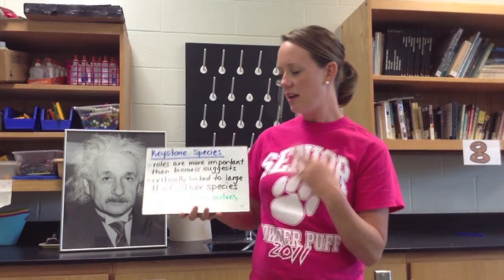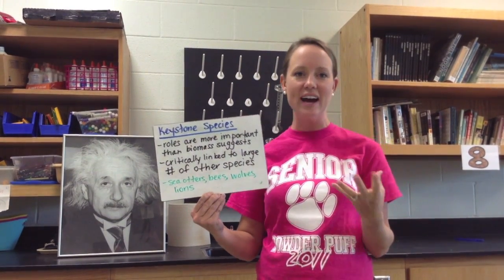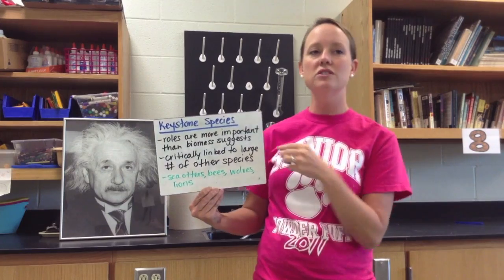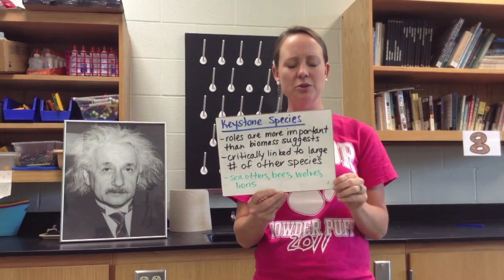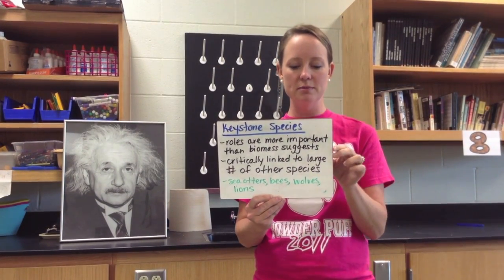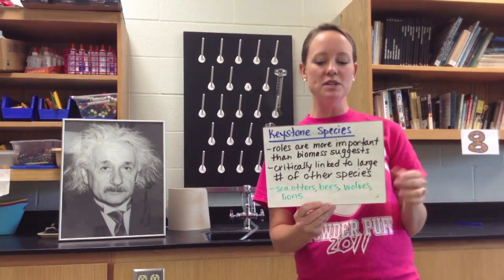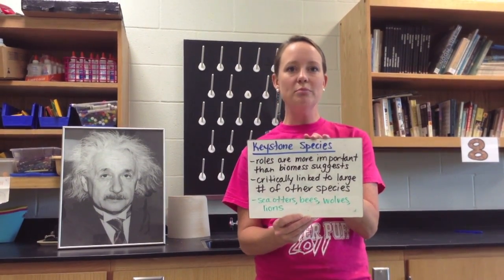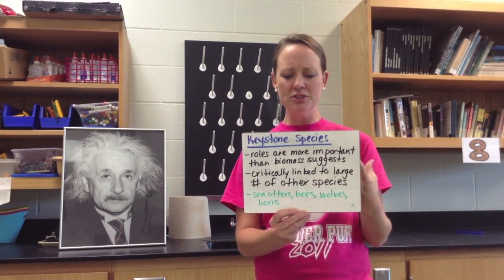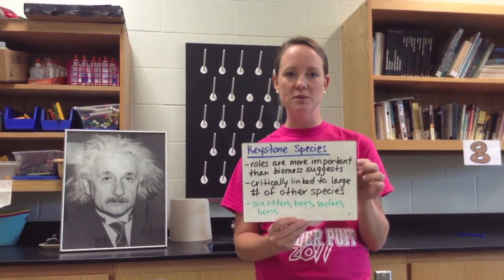Other classifications of species in an ecosystem: if an organism has a pivotal role in the ecosystem that is more important than their size suggests, they're known as a keystone species. They are usually critically linked to a large number of species in the ecosystem. If something happens to one of these organisms, it can lead to population crashes or even extinction of other organisms. One example would be butterflies, bees, or hummingbirds that are important in pollination of flowering plants. Also, a top predator can be considered a keystone species, helping regulate the population of the species they feed on.